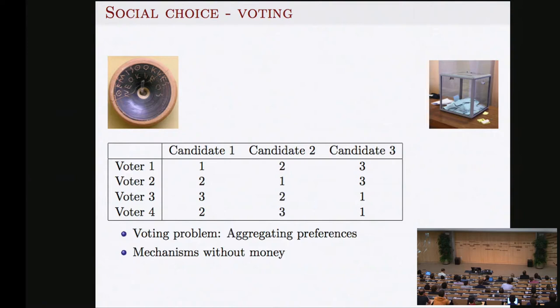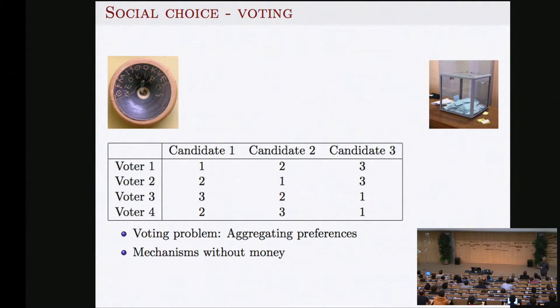In voting we have candidates, politicians, and voters who must select a president. Voter one prefers candidate one, second choice is two, third choice is three; other voters have their own preference orderings. Suppose we have these voters declaring their preferences — who should become president? It's very hard to say because individual preferences must be aggregated and they don't agree.